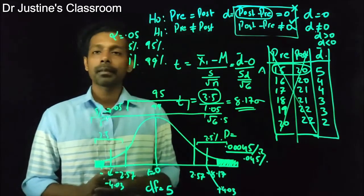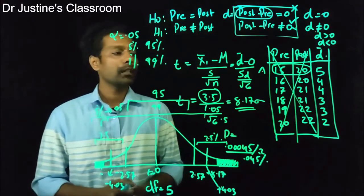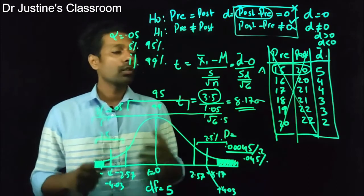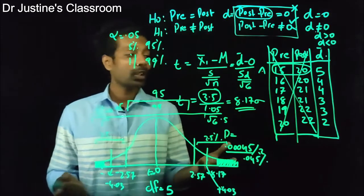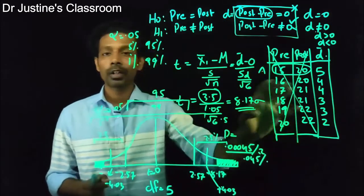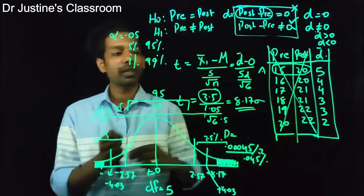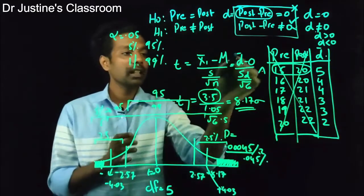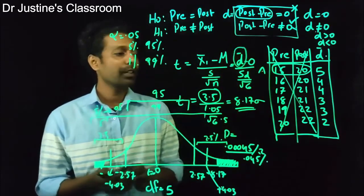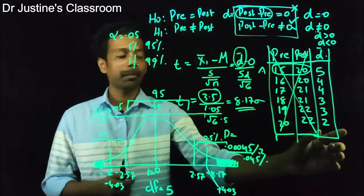What are the assumptions of the paired sample t-test? As with every t-test, the sample has to be normally distributed. But which values need to be normal? Not the pre-test values or the post-test values separately — it is the D scores that have to be normally distributed, because we are working with the D value. So the D scores must follow a normal distribution.